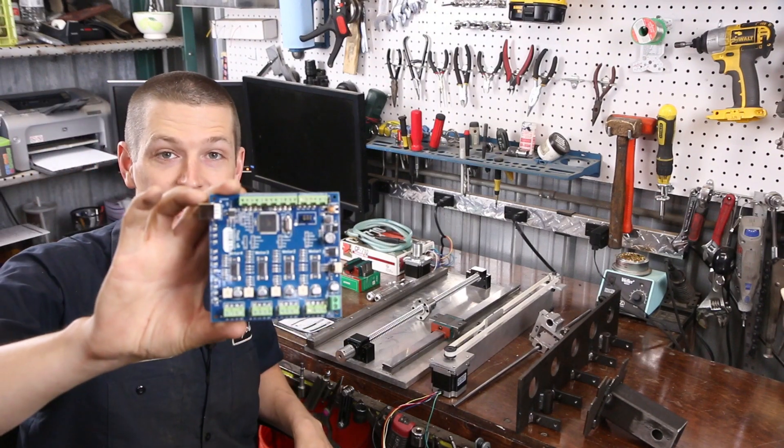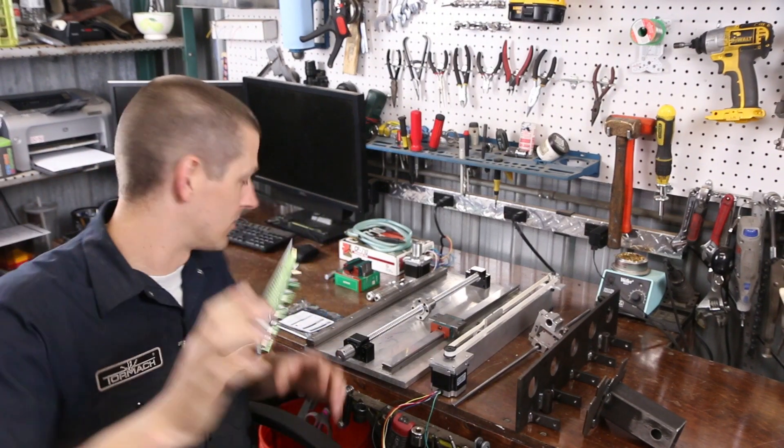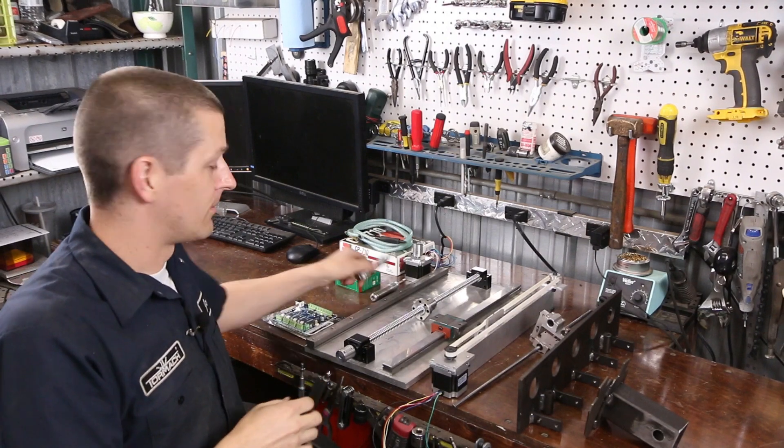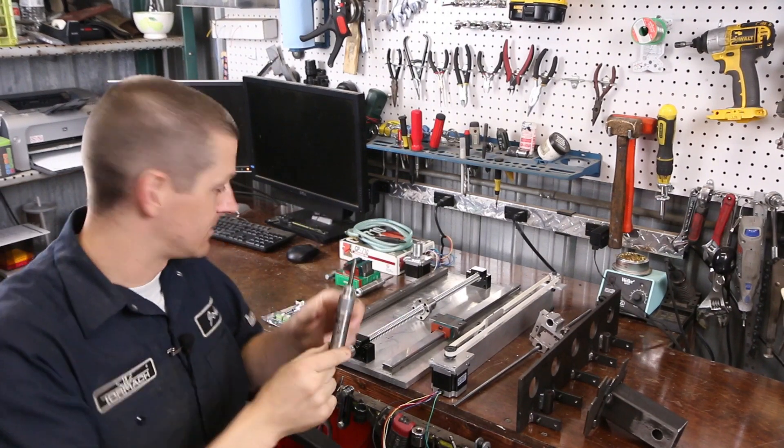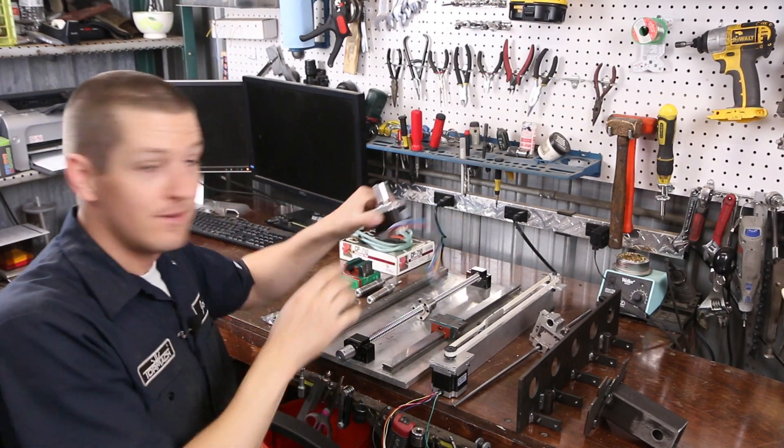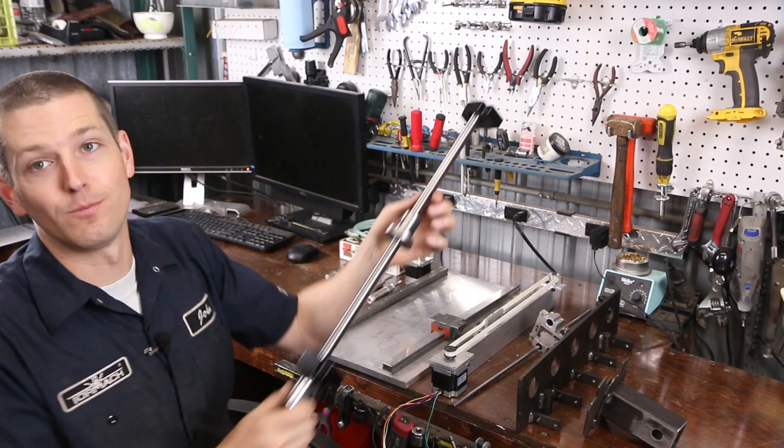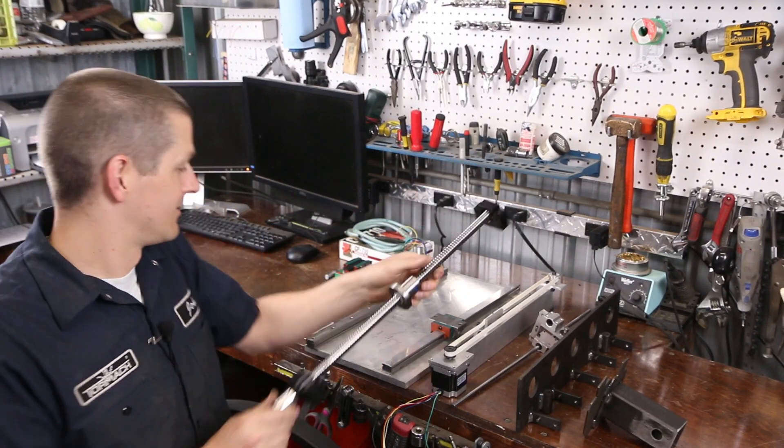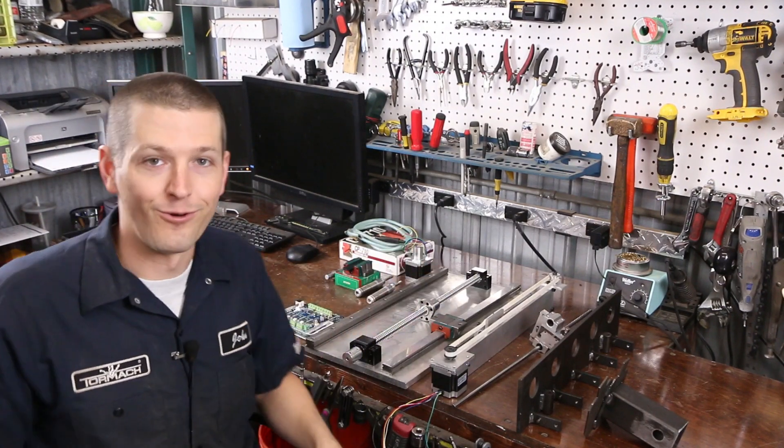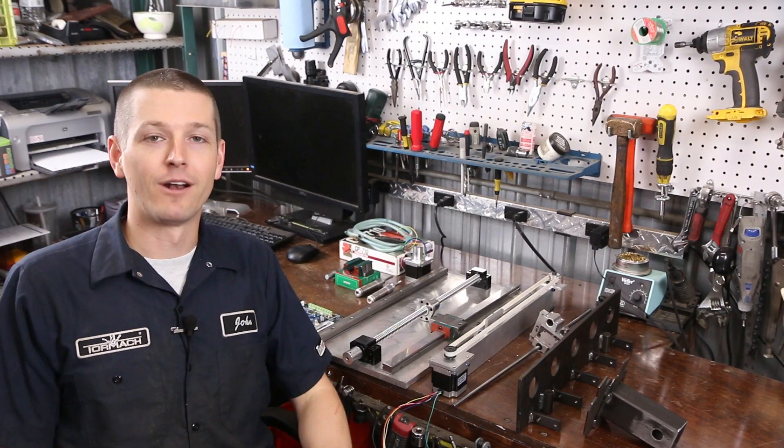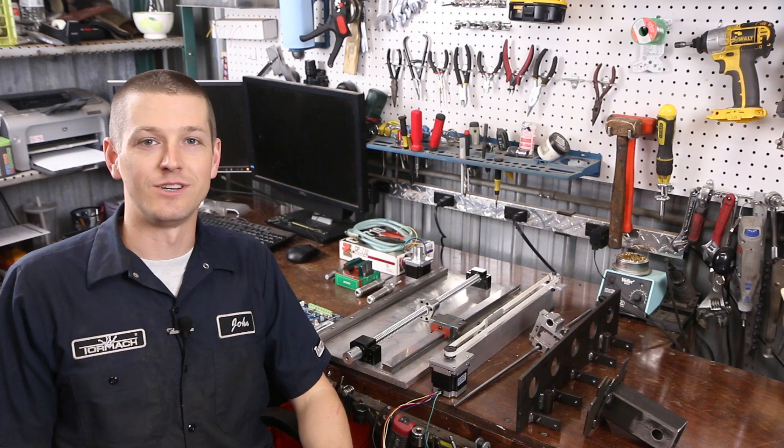We've got a TinyG CNC controller, pneumatic cylinders, NEMA 23 stepper motors, and awesome hardware like these ball screws. Folks, let's build a bigger and better DIY CNC machine. Welcome to another episode of NYC CNC.